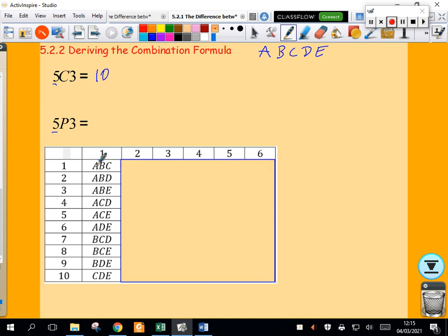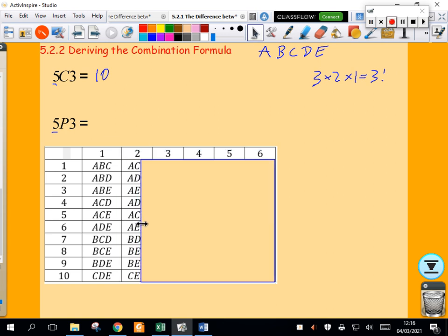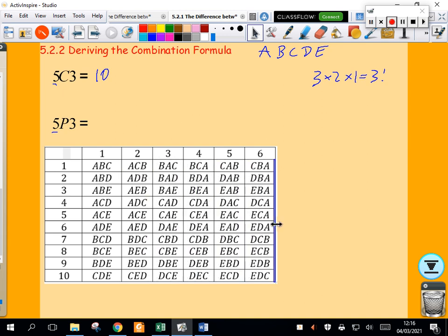And each of those choices, how many ways can I arrange them? Well, how many ways can I arrange ABC? There's 3 by 2 by 1 ways, which is 3 factorial ways to arrange that, which is 6. So each of these combinations can be arranged in 6 different ways. So there's a table showing all possible permutations.